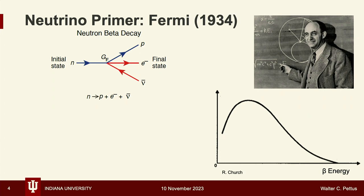In those same seminal papers — which got rejected from Nature, by the way, if you ever feel bad about a journal rejection — Fermi noted that the presence of this neutrino impacts the endpoint of the decay spectrum. This is about 90 years ago, and this is the method I'm going to tell you about later: you look at the endpoint of the spectrum, and the shape tells you whether the neutrino is massless or massive. Depending on the mass, you see a different shape distortion at the endpoint.